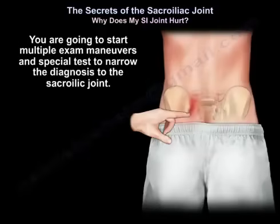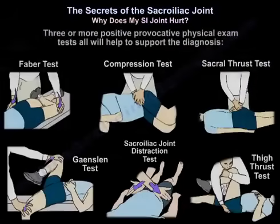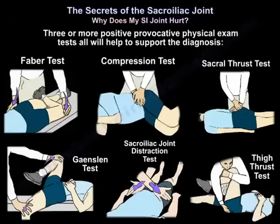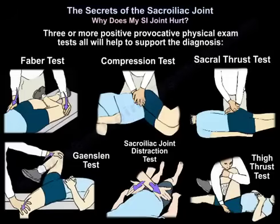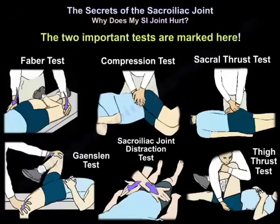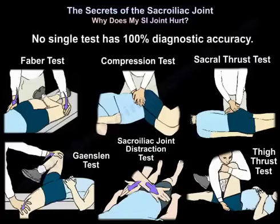You will perform multiple exam maneuvers and special tests to narrow the diagnosis to the sacroiliac joint. You need three positive tests, and you should warn the patient that these tests will cause pain. The tests include the FABER test, compression test, sacral thrust test, Gaenslen test, sacroiliac joint distraction test, and thigh thrust test. The two most important are the compression test and the thigh thrust test. No single test has 100% diagnostic accuracy.